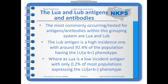The most commonly tested for antigens in this blood grouping system are LUA and LUB. LUB is a high incidence antigen — around 92.4% of the population have the phenotype LUA negative, LUB positive. LUA is a low incidence antigen with only 0.2% of most populations expressing the LUA positive phenotype. These are generalised statistics that will fluctuate slightly depending on nationality and ethnicity.